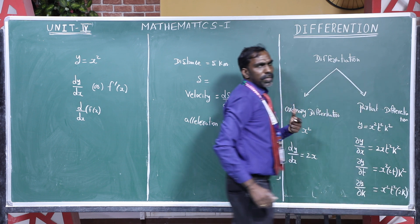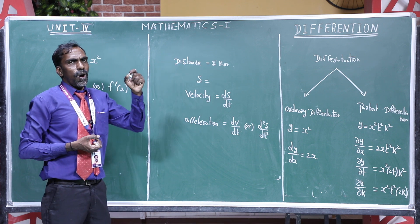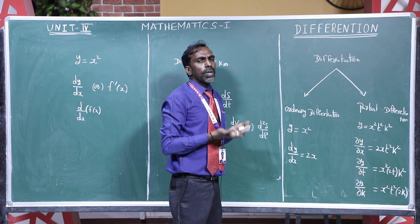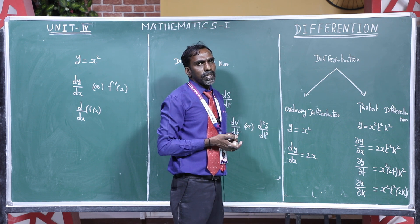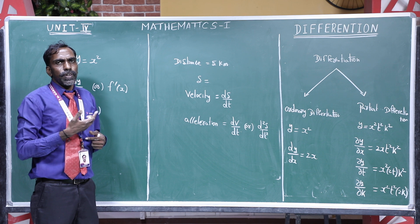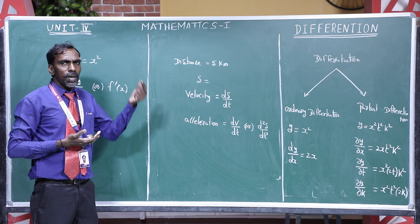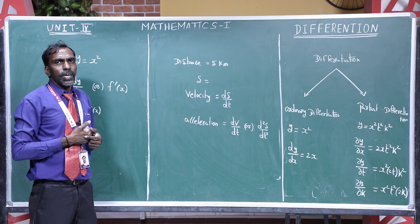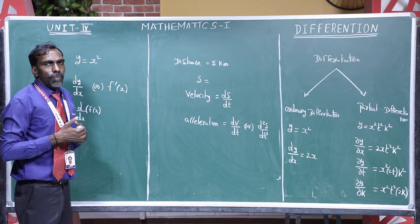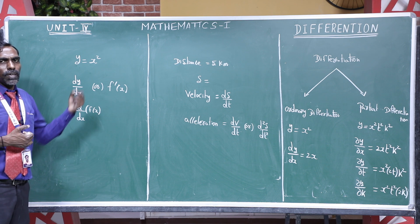So this is ordinary differentiation and partial differentiation. If a function has only one independent variable, use ordinary differentiation. If it has more than one independent variable, use partial differentiation. Partial differentiation has many applications such as the one-dimensional wave equation, two-dimensional heat equation, and more. These appear throughout engineering and daily life. Now we will look at the basic formulas needed to solve problems.